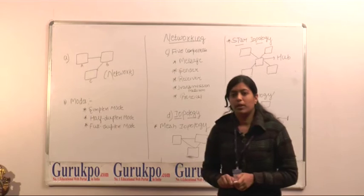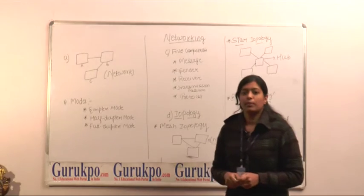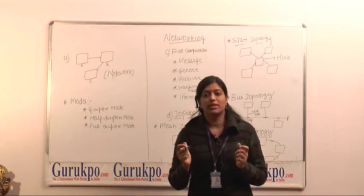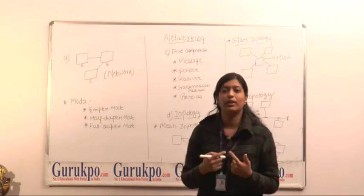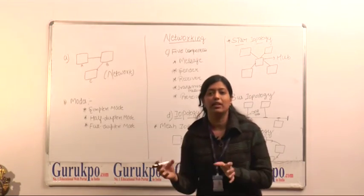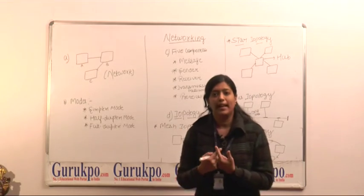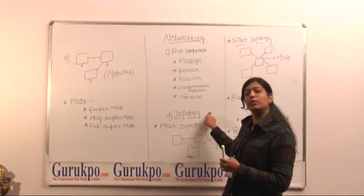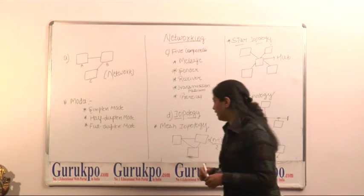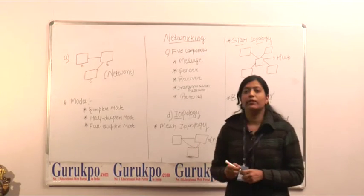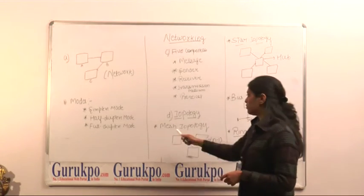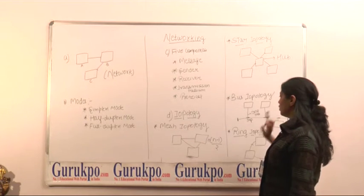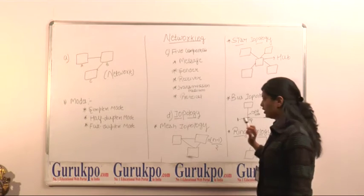Now, the fourth part of networking is topology. Topology is simply how the computers are connected in a network — how they are arranged or communicating. It is the arrangement of physical devices in a network. We have four types of topology: first is mesh topology, second is star topology, third is bus topology, and fourth is ring topology.